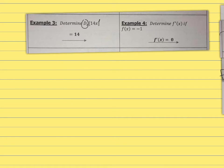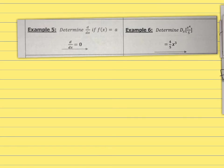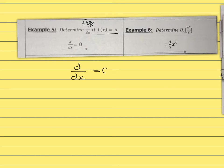Next: determine the derivative of f(x) if f(x) equals minus 1. Remember, if there's no x or variable, this always becomes 0. f(x) equals a, where a is any constant number with no variable — the derivative will always be 0. That is a rule you have to remember.